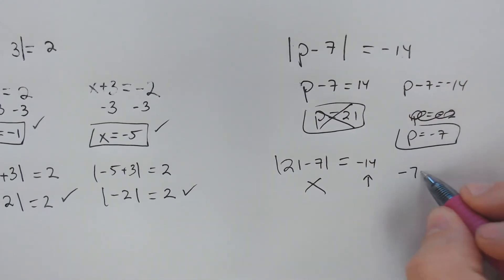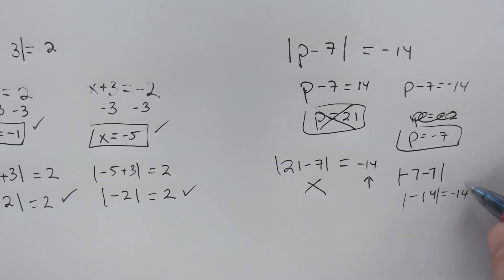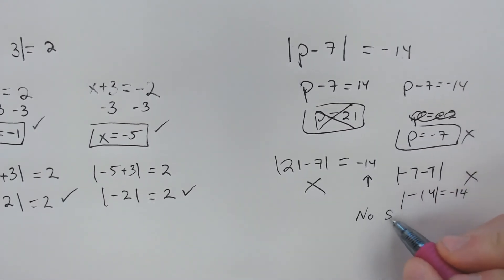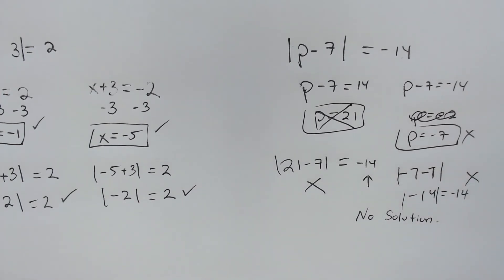You get 21 minus 7, which equals 14, not negative 14 like this is supposed to. So it just doesn't work. And then you get negative 7 minus 7, which is negative 14. But the absolute value of negative 14 is not negative 14, it's positive 14. So this also doesn't work.